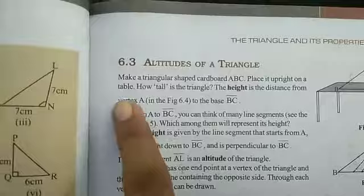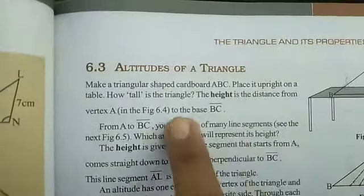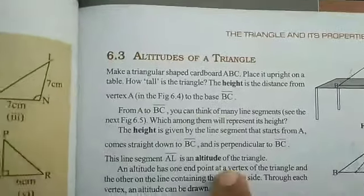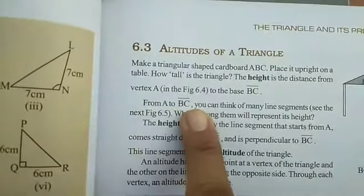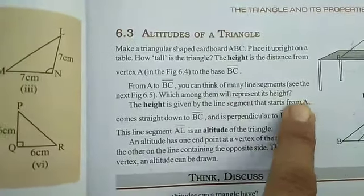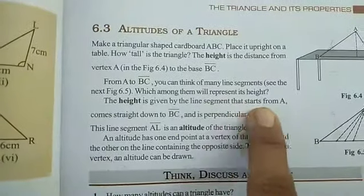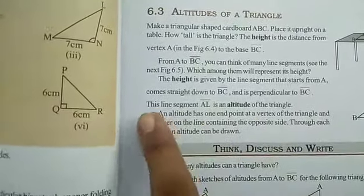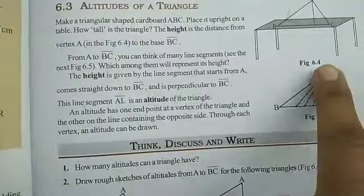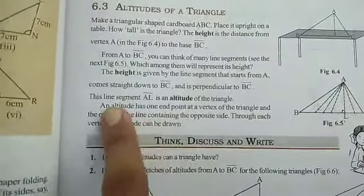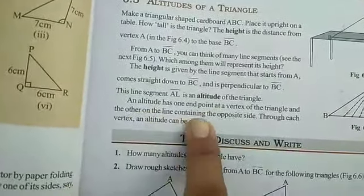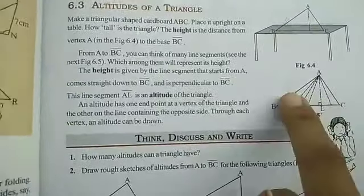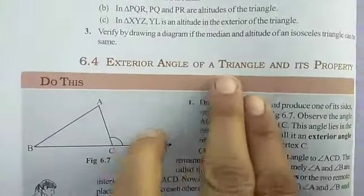The altitude of a triangle: place a triangle-shaped cardboard ABC upright on a table. The height of the triangle is the distance from vertex A perpendicular to base BC. The line segment AL, which goes straight down and is perpendicular to BC, is called the altitude. Altitude has one endpoint at a vertex and the other on the opposite side. Through each vertex A, B, and C, an altitude can be drawn.